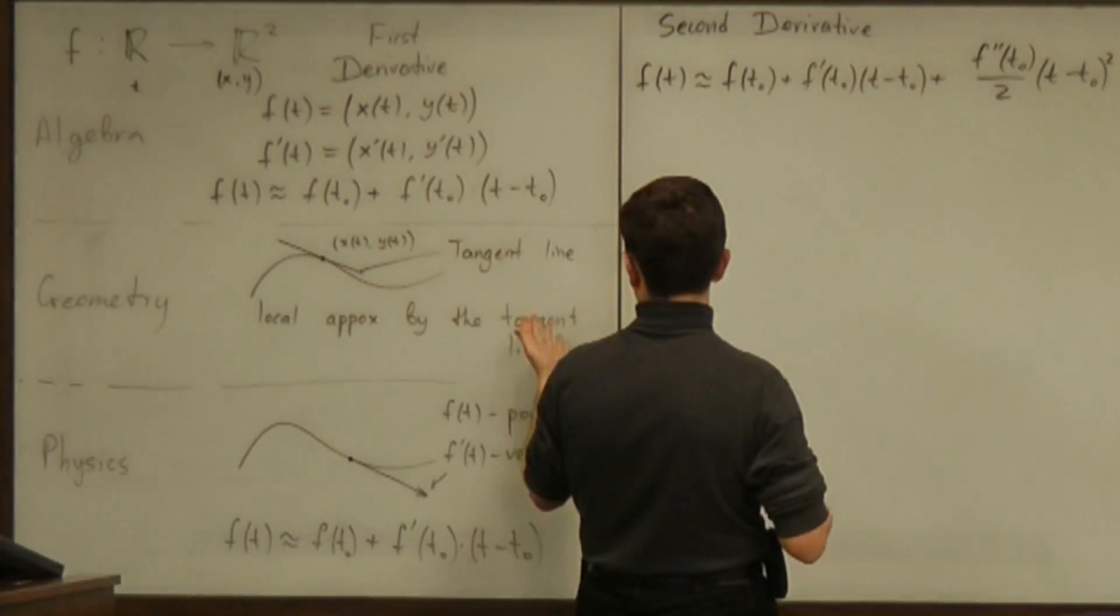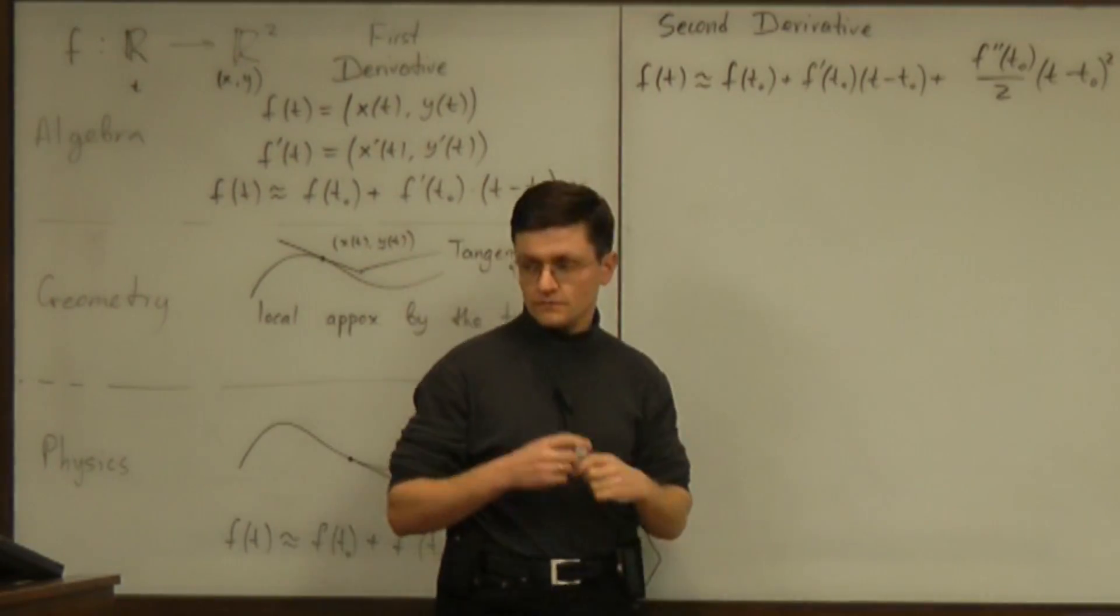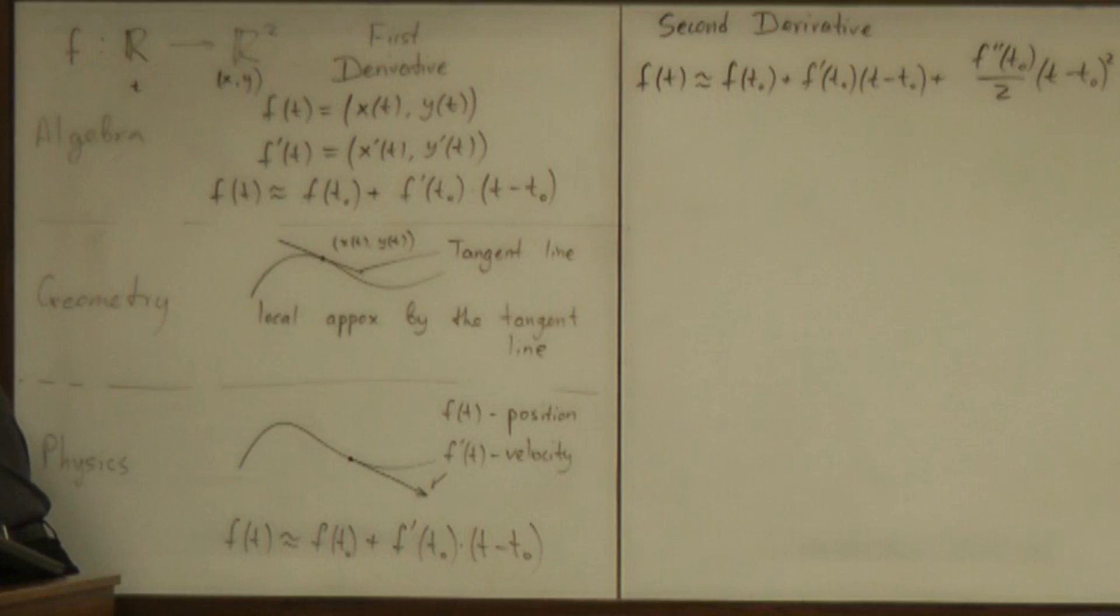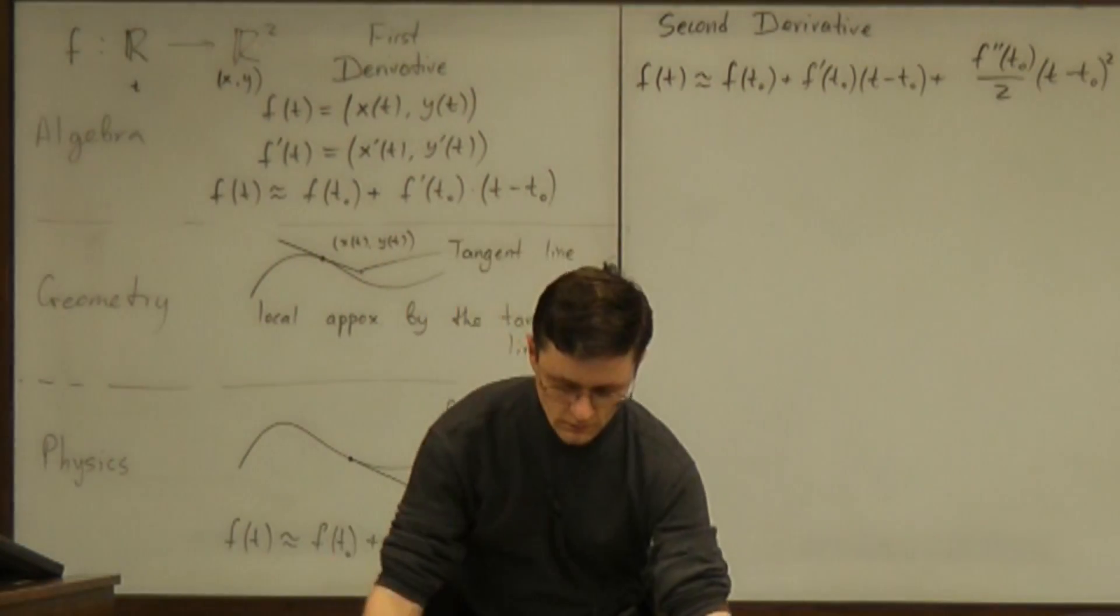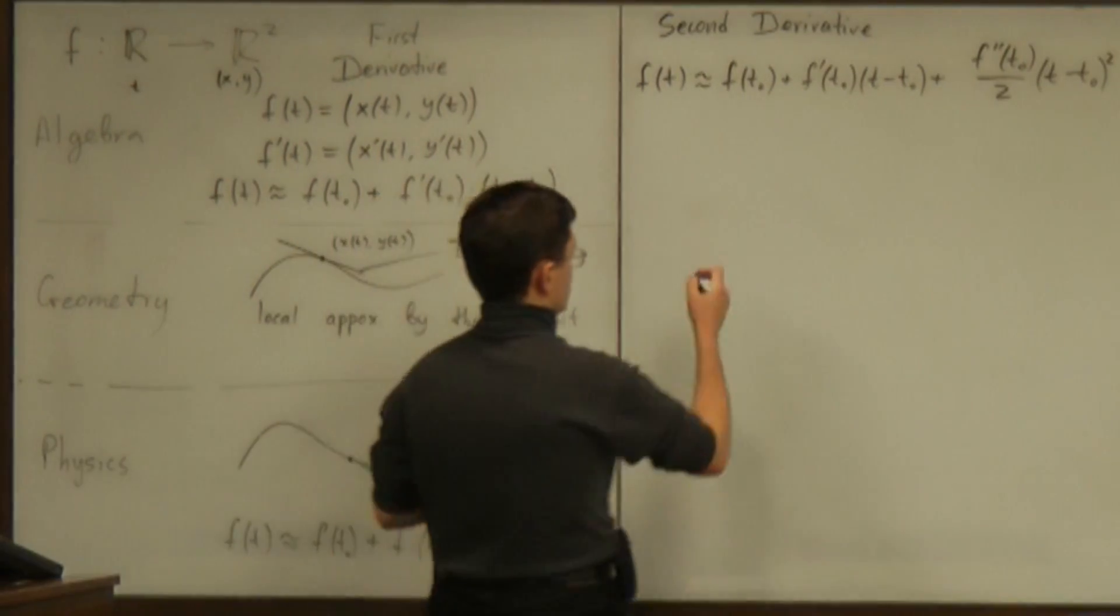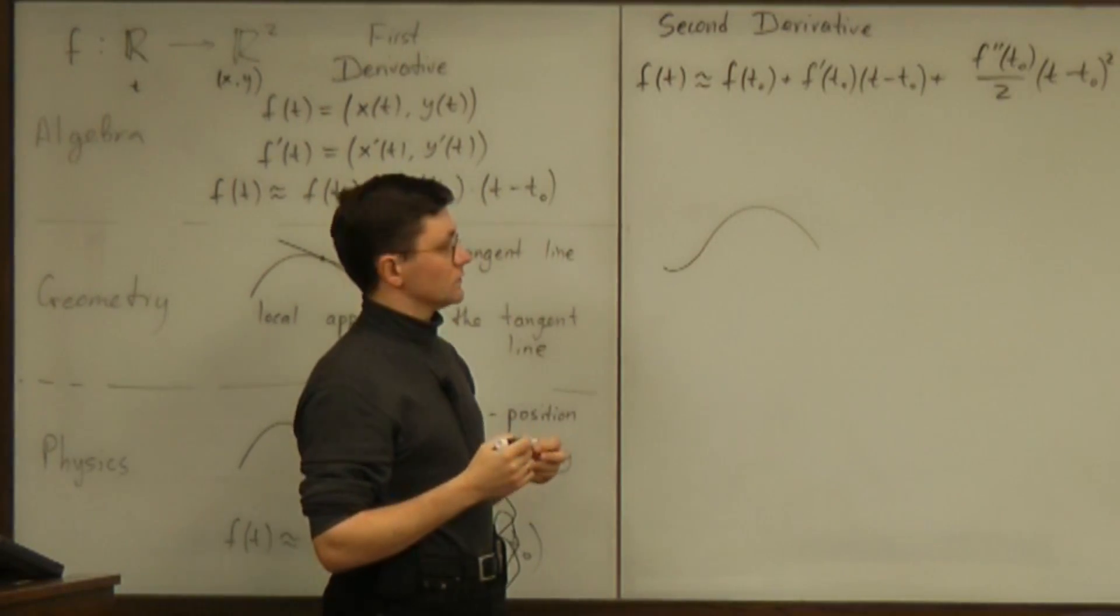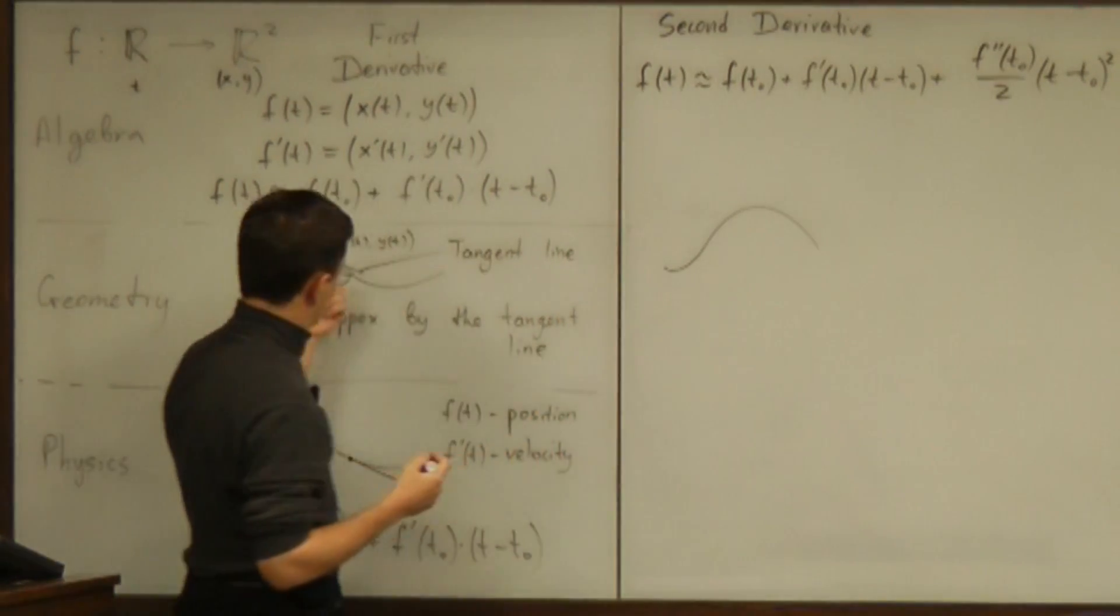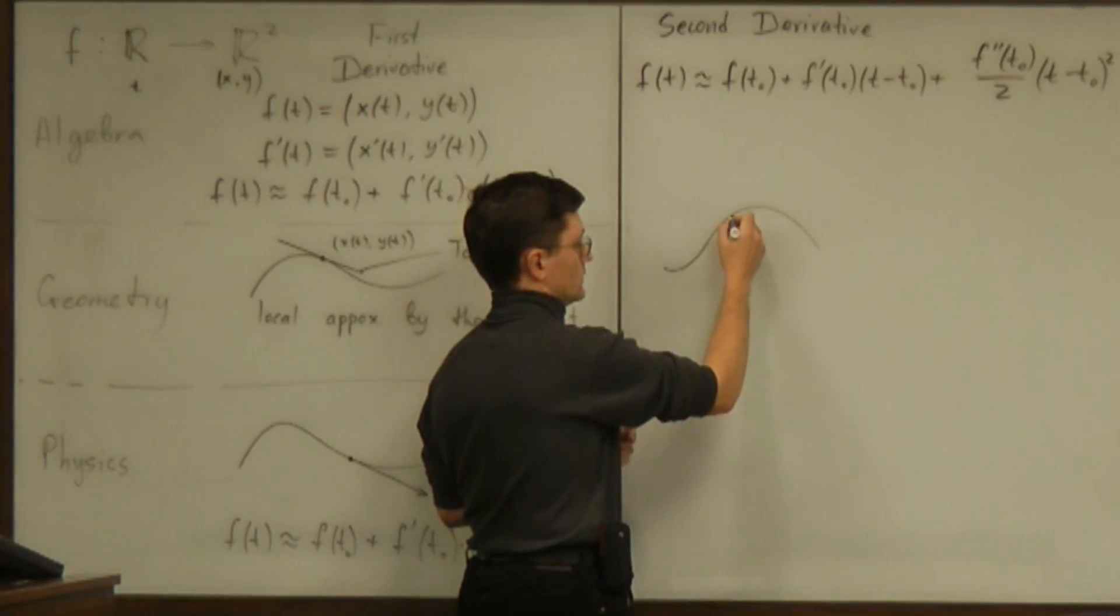Now what about geometry? What does it mean to have second derivative from geometric point of view? From geometric point of view, we would like to approximate the given trajectory by something simple of degree 2. Now, the obvious thing of degree 1 was the tangent line.